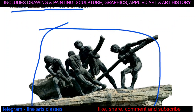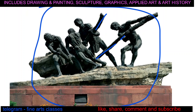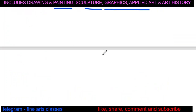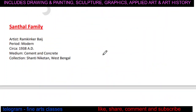So in summary, this sculpture has four figures pushing a massive heavy rock with wooden logs, doing their labor work and contributing to nation building. This was the first sculpture, by DP Ray Chowdhury.